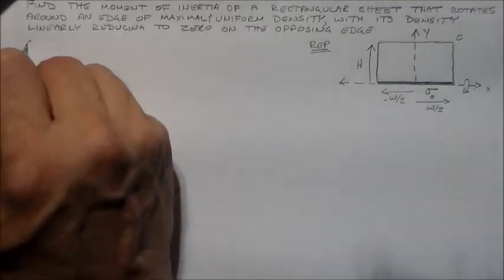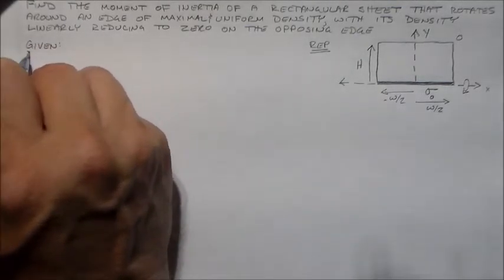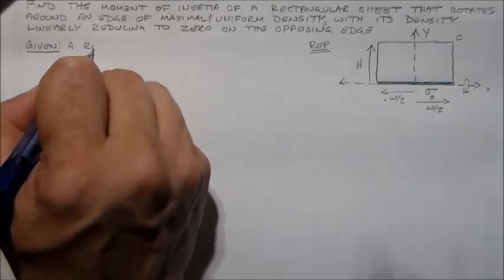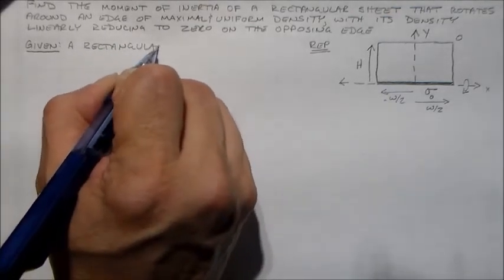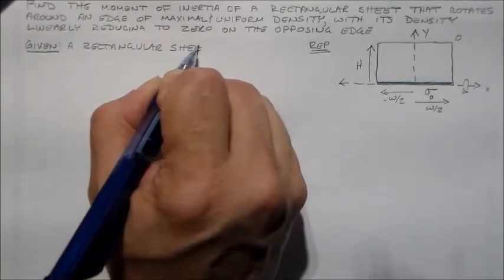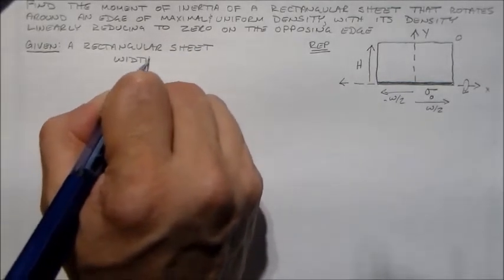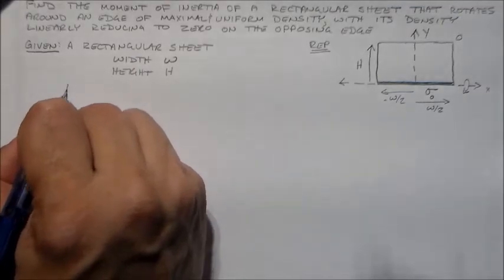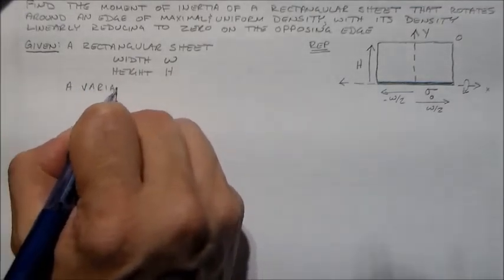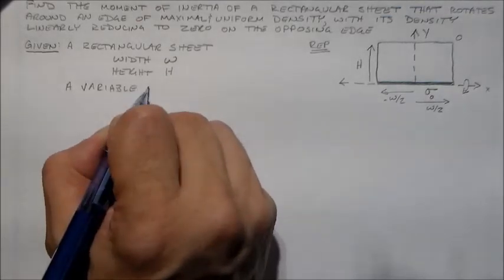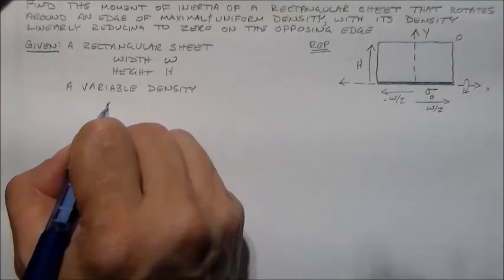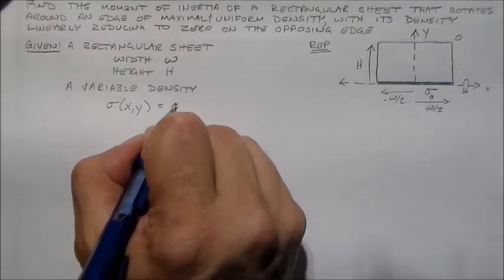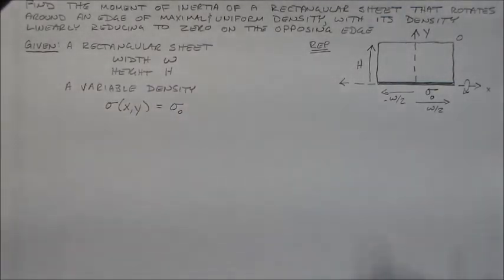We want to find its moment of inertia. So the first thing I always do is I just tally up what I know and what I want to find. So if I've got a rectangular sheet that has a width of w and a height of h and has a variable density. That variable density is going to be sigma of xy equal to sigma naught. And we use sigma for the density if it's a surface density, if it's a two dimensional density.